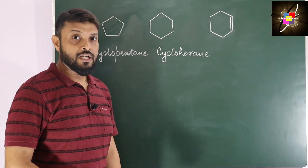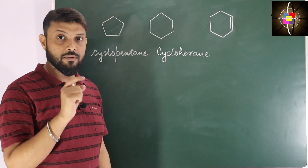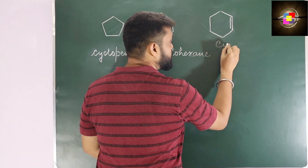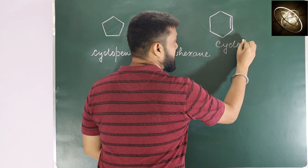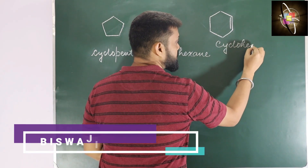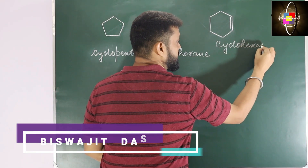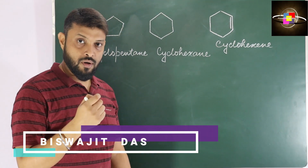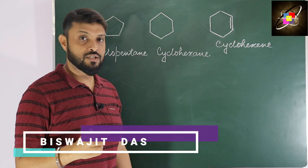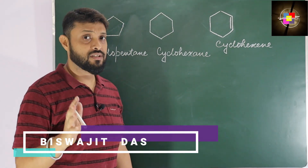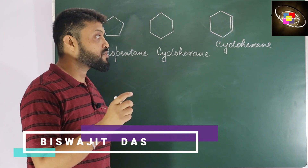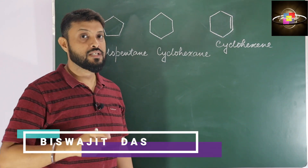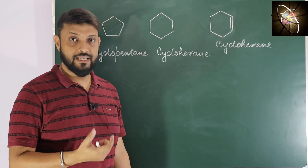Now this one poses a double bond within it, so we have cyclohexene. Since there is only one double bond and no substitution or additional functional group in it, we will just write cyclohexene — no need of writing cyclohexane.